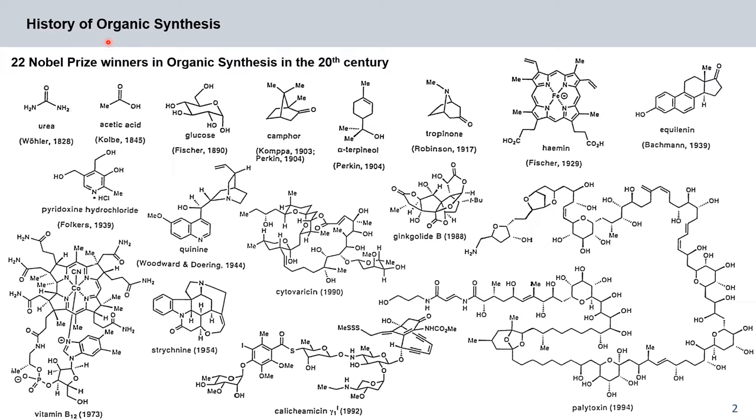Organic synthesis is a fairly young field, but a very important one. Just in the 20th century alone, 22 Nobel prizes were won in organic synthesis. The start of organic synthesis is marked by the rational synthesis of urea by the German chemist Wöhler in 1828. And you can see here that during the early years of organic synthesis, simpler targets were considered. Chemists attempted to connect known starting materials to these targets. But as the complexity of a target molecule increased, this became more and more difficult and higher levels of planning were needed and new reactions needed to be developed.